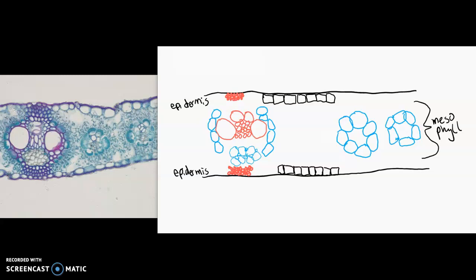The last thing that I want to bring your attention to is on the epidermis itself, we have some special cells called the guard cells. And I tend to kind of look to see where I have air spaces in my mesophyll, and that usually kind of helps me pick out where those guard cells are.